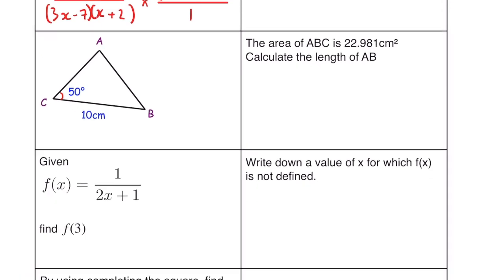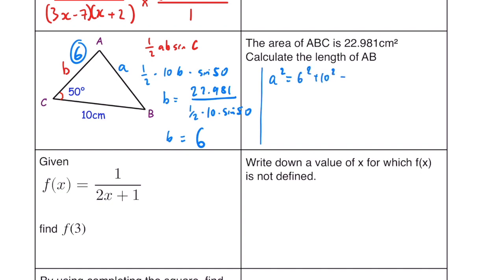The area of ABC is 22.981, calculate the length of AB. So we know using the formula half a b sin c we can work out, let's call this one b. So half multiplied by 10 b times sin of 50 is going to equal 22.981. So if we put in our calculator, b is equal to 22.981. If we divide this whole thing underneath, so half multiplied by 10, multiplied by sin 50, then we're going to get our value for b. So b is equal to 6, and then using the cosine rule, if I just get rid of that, give us a bit of space. So if I call a b a, we know that a squared is equal to 6 squared plus 10 squared minus 2 lots of 6 times 10 cos 50. And if I put all that in the calculator, I get 58.87, and then if I square root that, I get 7.67 centimeters.